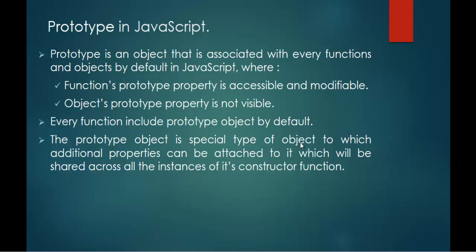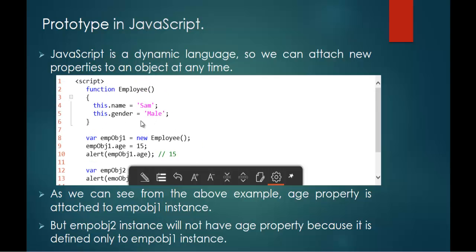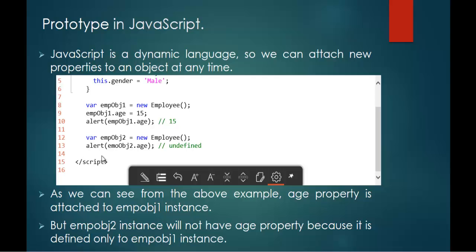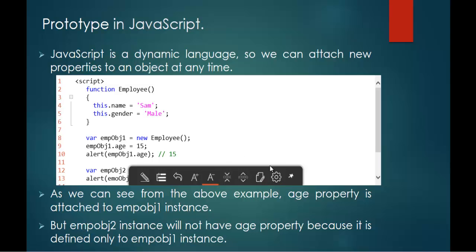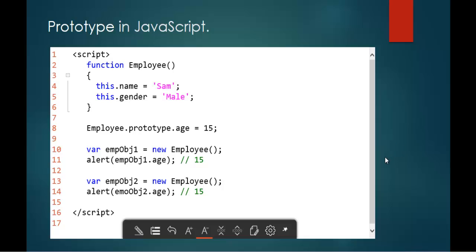The prototype object is a special type of object to which additional properties can be attached, which will be shared across all the instances of its constructor function. Suppose if I wish to add a new property to the function employee at the 14th line or at any point, I can add it with the help of prototype. All the instances created of the function employee will then have that particular property created using the prototype.